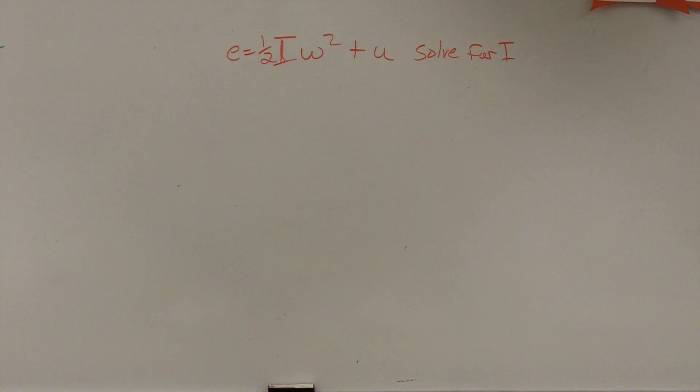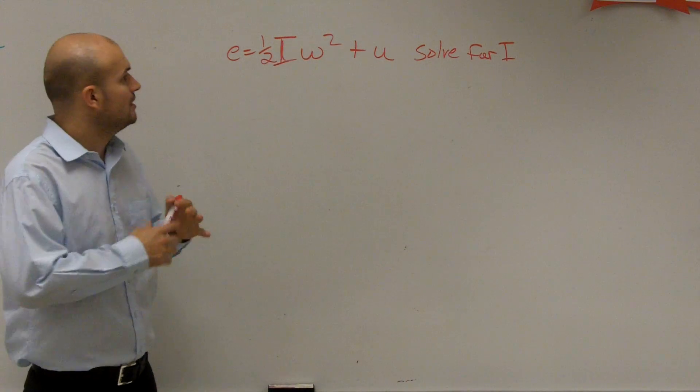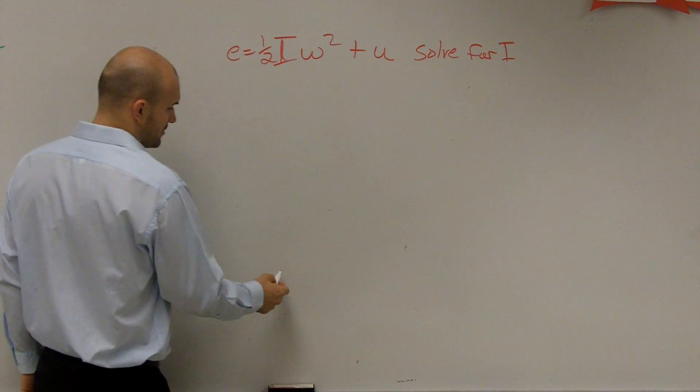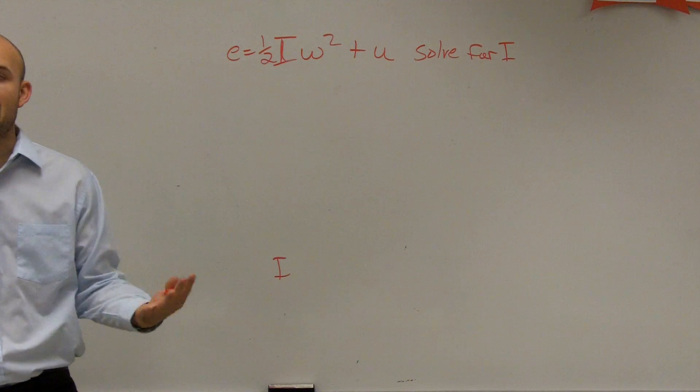So what this problem states is e equals one half times i times w squared plus u. Remember the same thing, ladies and gentlemen. When we're trying to solve this, we want to isolate the i. We want to get i by itself.